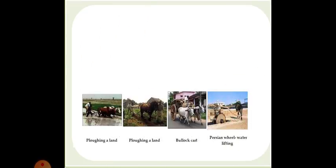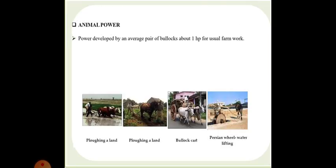The next is animal power. Plowing of the land with horses or with bullocks, and Persian wheels for water lifting, all these devices are relying on animal power. The power developed by an average pair of bullocks is about 1 HP for usual farm work. The bullocks are employed for all types of farm works in all seasons.